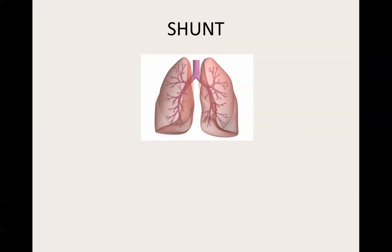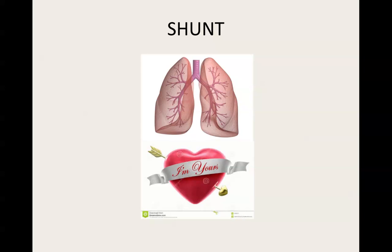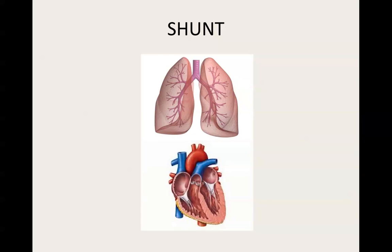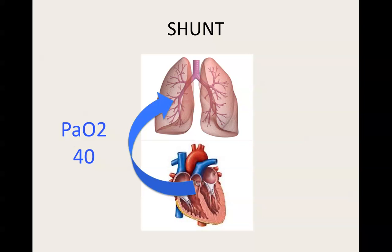Recall that the lungs get their blood supply from the heart. While we think about the heart as having only one chamber, in reality it has four chambers and two completely separate sides. The right side of the heart pumps deoxygenated blood to the lungs through the pulmonary artery, which is shown here in blue. The partial pressure of oxygen in the venous blood is about 40.